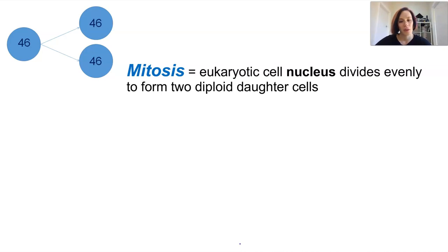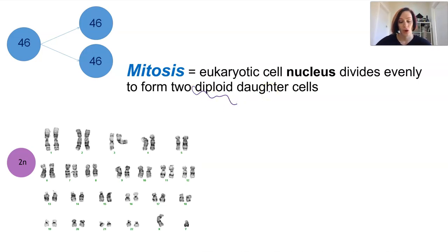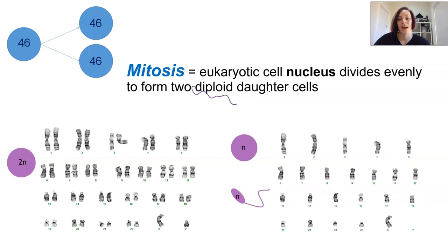Both the parent and daughter cells are considered to be diploid, meaning they contain two copies of each chromosome — one inherited from the mother and one from the father. This is opposed to haploid cells, which carry only one copy and occur only in our gametes, like eggs and sperm.